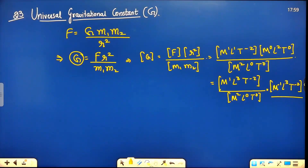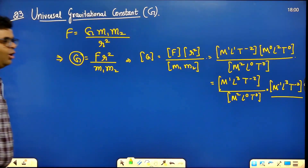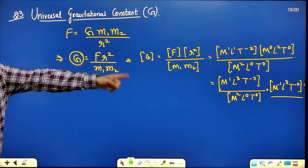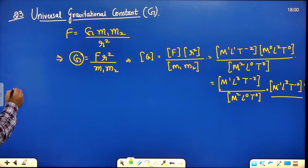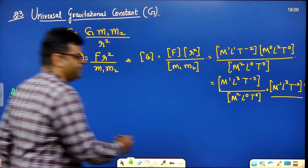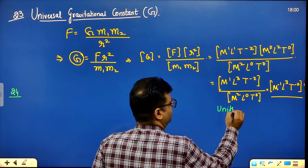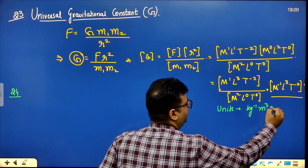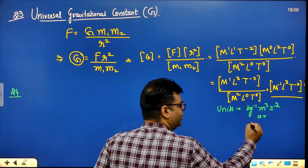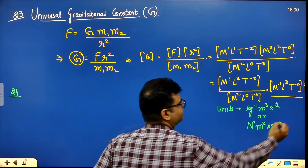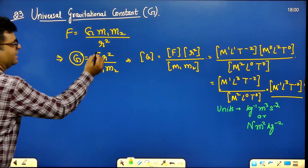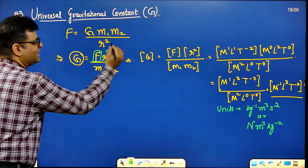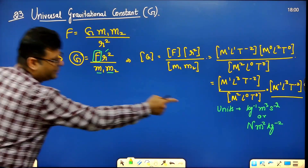So dimensions of G are M⁻¹L³T⁻². This appears as a standalone exam question: 'Find the dimensions of universal gravitational constant.' Its SI units are kg⁻¹·m³·s⁻², also written as N·m²·kg⁻².